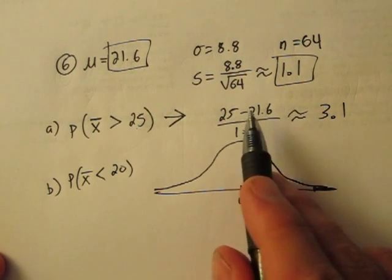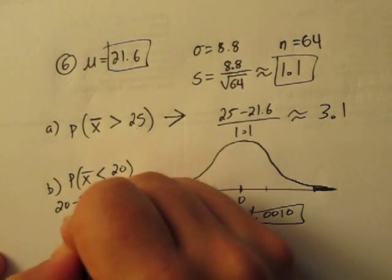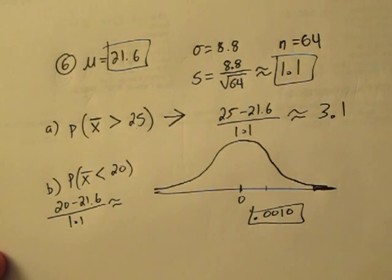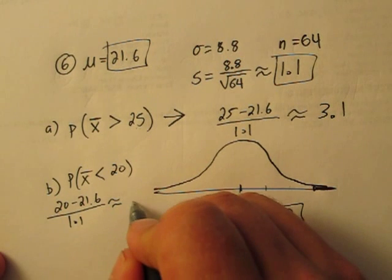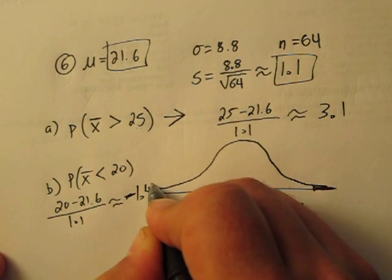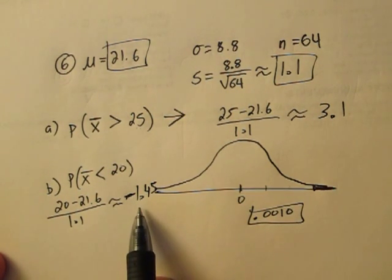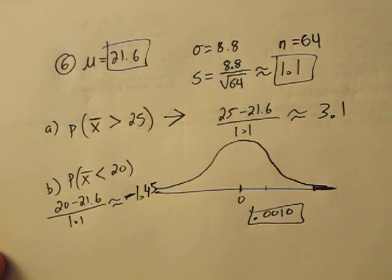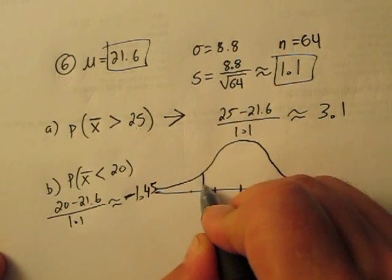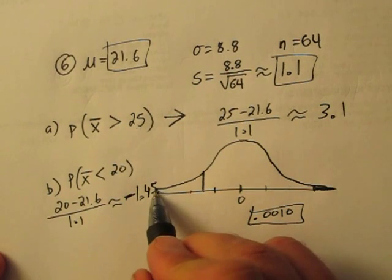So we use our z-formula again. And this time we get a much less extreme z-score, meaning this event is much more likely to occur. So a z-score of negative 1.45. And we want less than negative 1.45. So here's one, it'd be about right here. And we want this area.